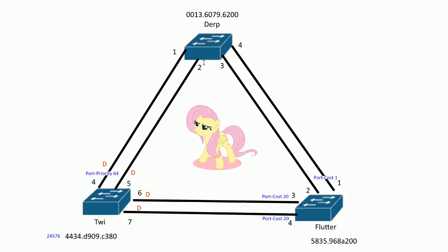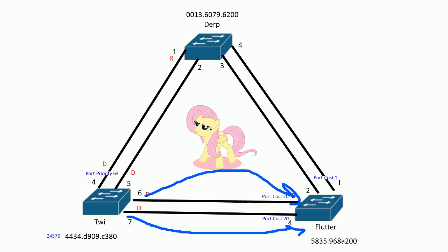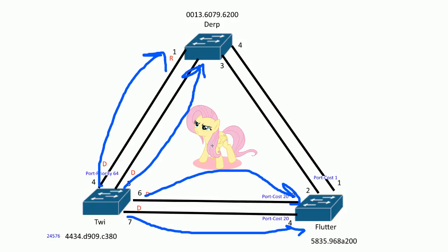Port one on Derp becomes the root port. Now let's focus on Flutter. Flutter receives BPDUs and port four adds a cost of 20. Going out the other way, this port also adds 19, so the root port cost to the root bridge from Flutter is 19.